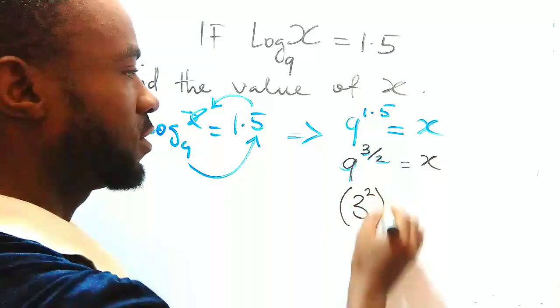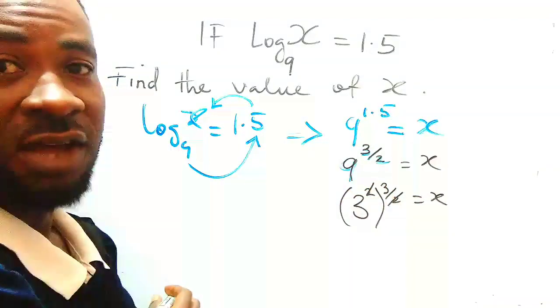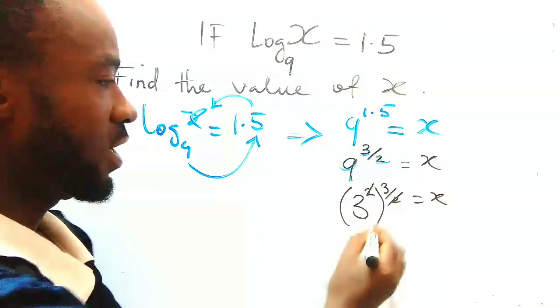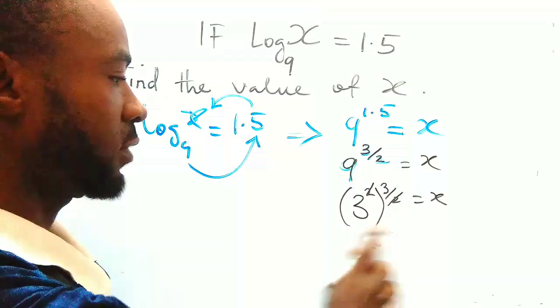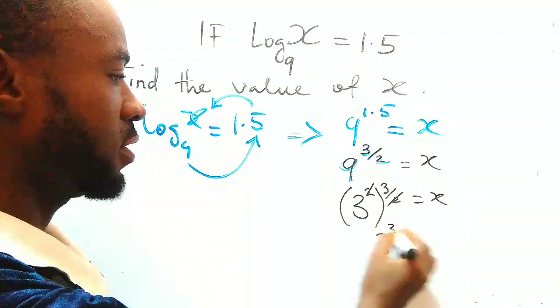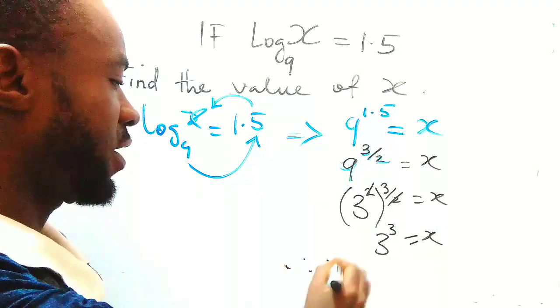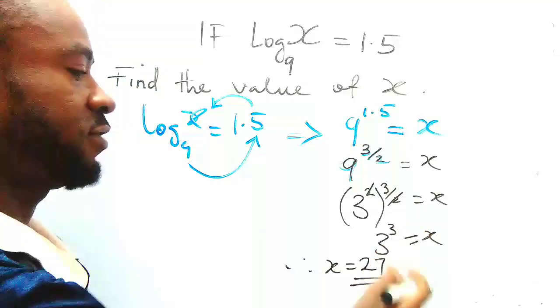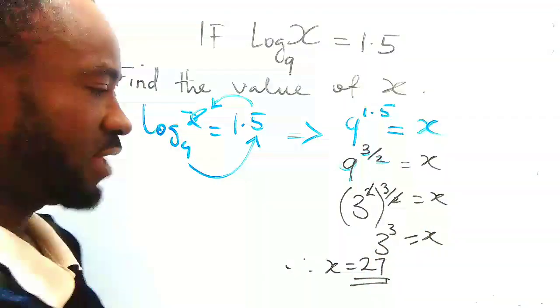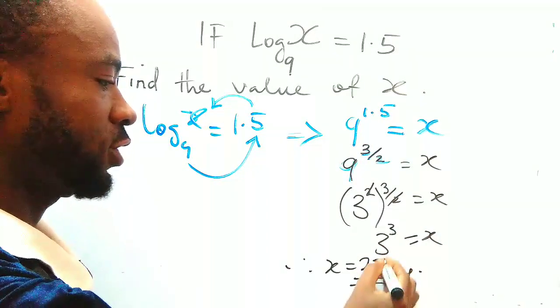So this 2 can cancel out this 2, can you see that? And then I'm left with 3 raised to the power of 3. So we have found, my x is equal to 27. 3 raised to the power of 3 is 27, and this is our solution.